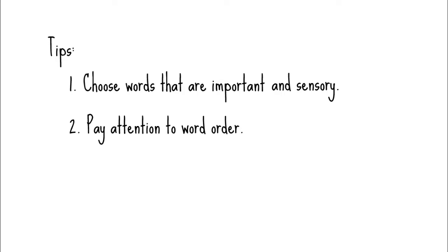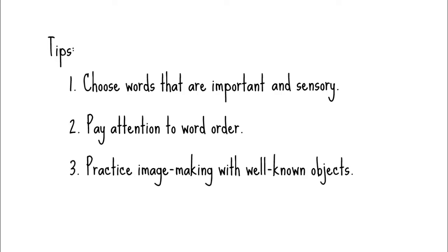Second, pay attention to word order. You might simply list the words in the order they appear in the story, but be aware that words that come early in the list may take on stronger meaning in students' minds than they actually have in the story. Finally, if students have trouble forming mental images, practice image-making with well-known objects. Without using a text at all, do some sensory exercises where students imagine eating a hot slice of pizza, holding a basketball, or sitting in the sun.